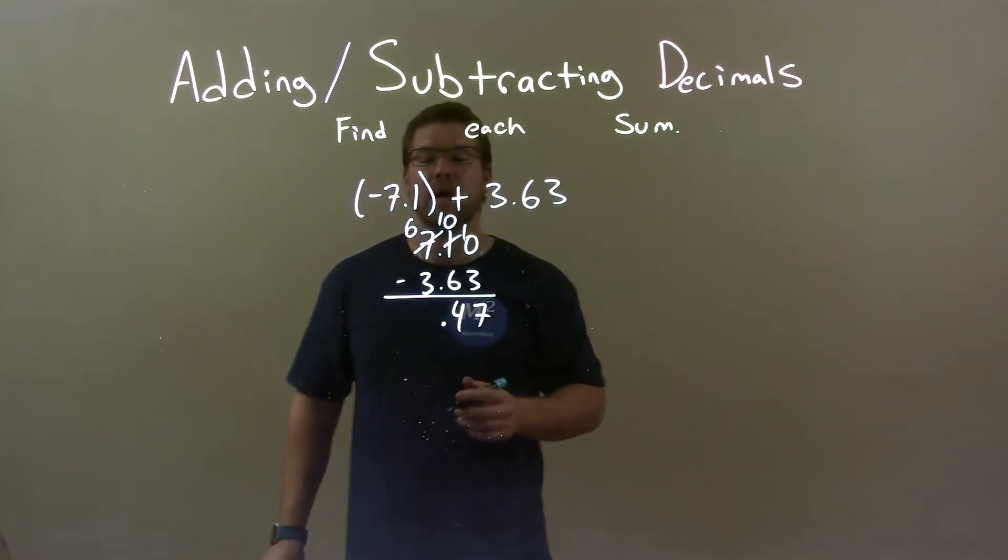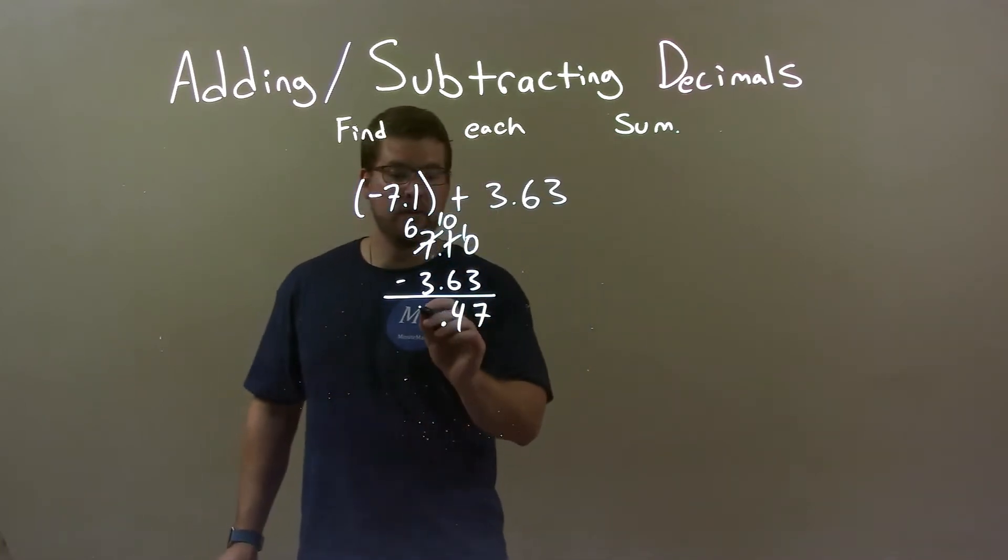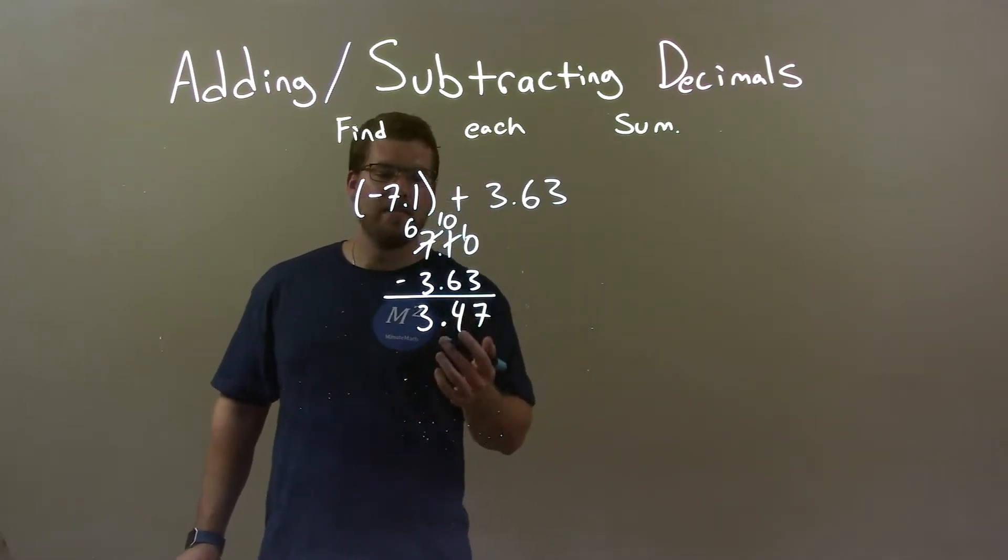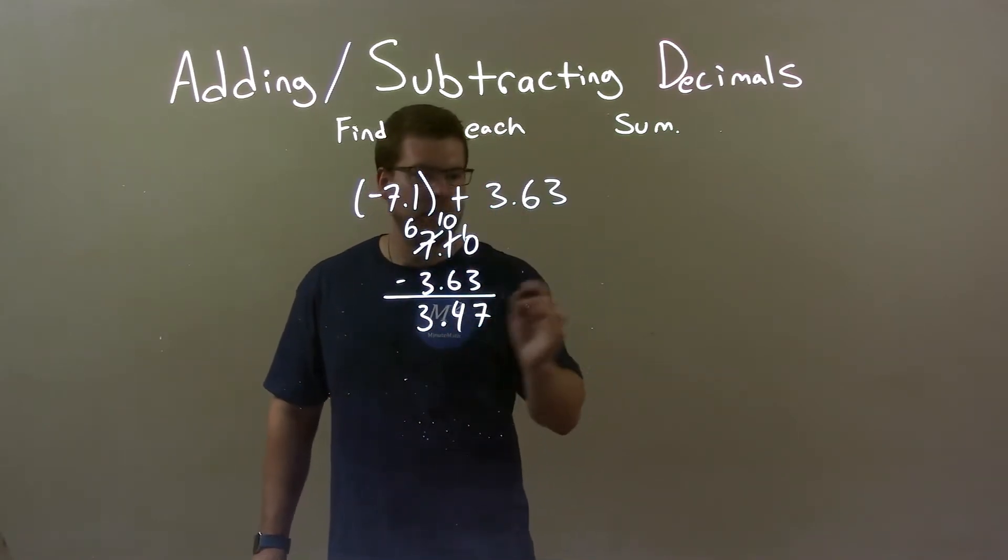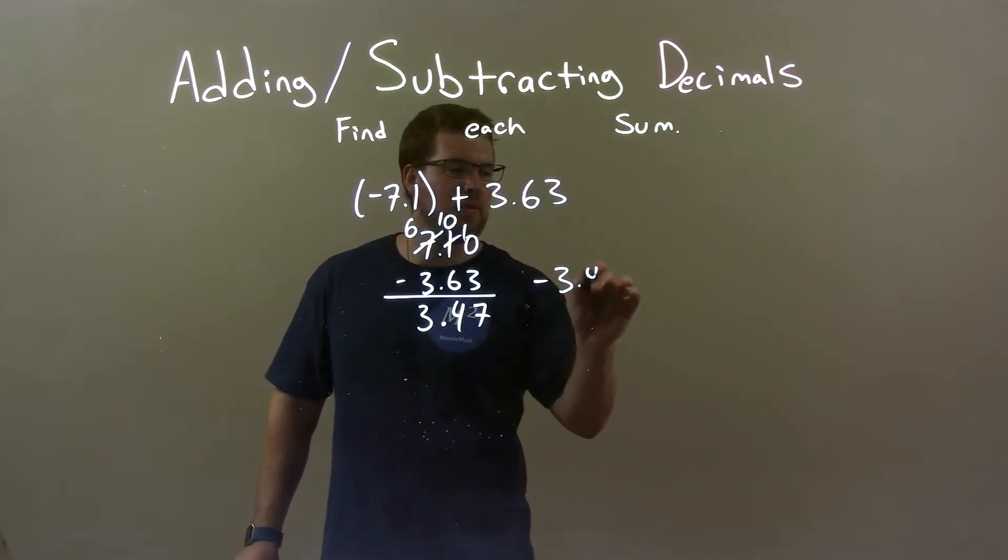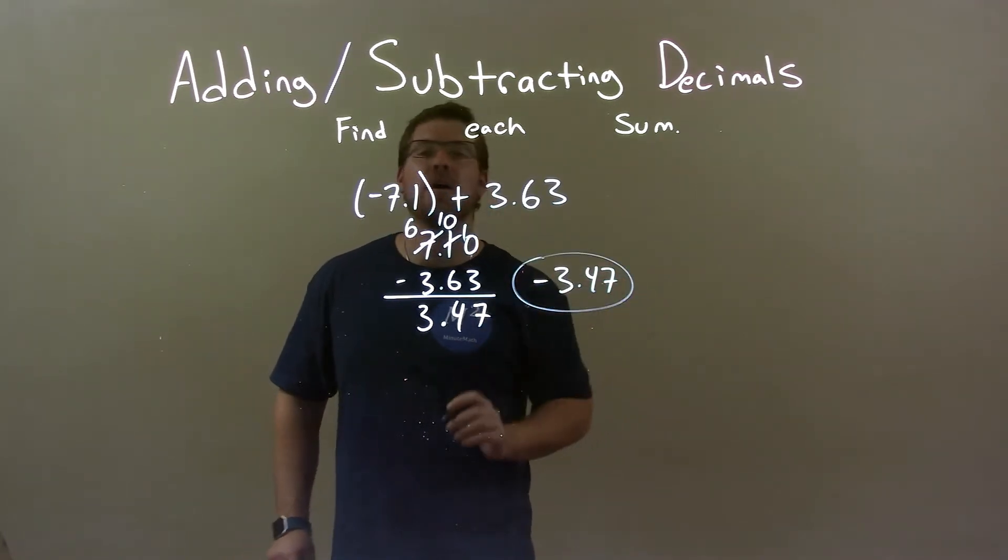Great, decimal place comes down. Now, I have six minus three, which is easy, and three. But don't forget, now we have 3.47, that our final answer needed to be negative. So, we have a negative 3.47, and there we have our final answer.